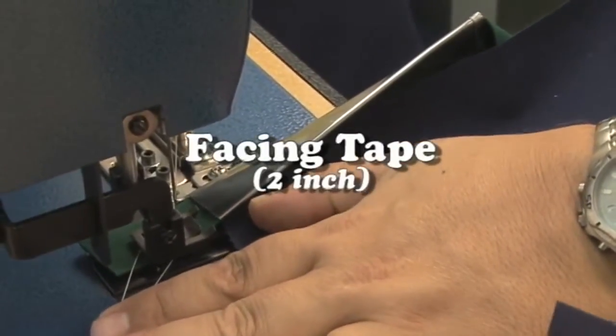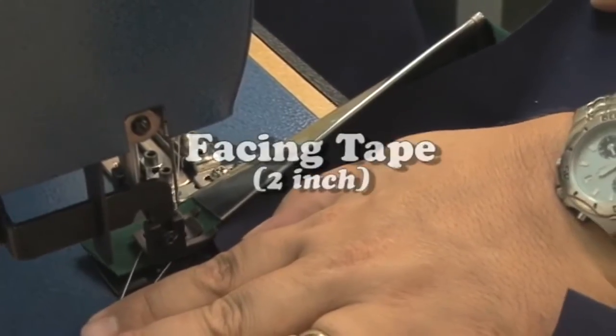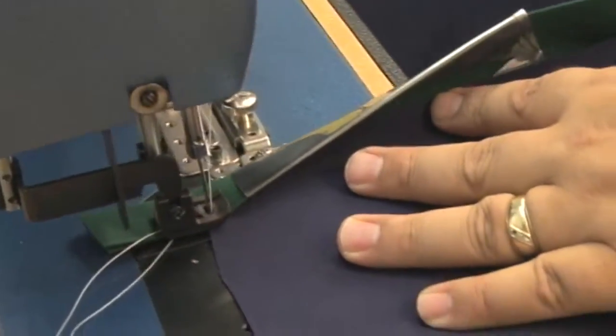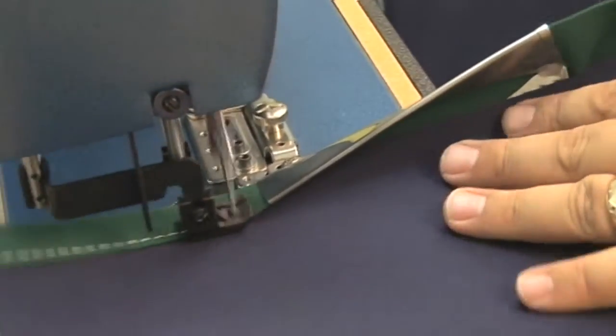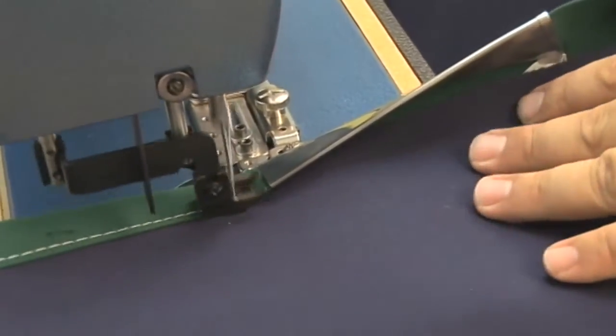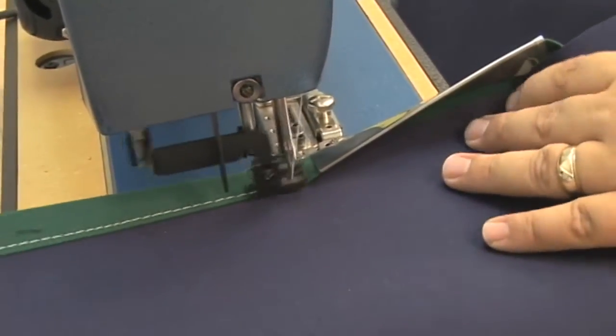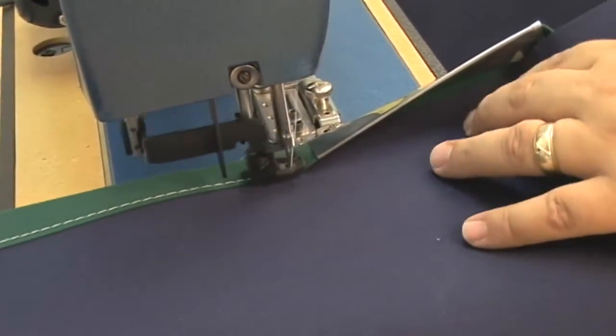We'll start out by showing you how it works with the 2 inch facing. This is a Sunbrella 2 inch facing, also works with Stamoid and other facing as well. This extremely high quality binder folds the facing automatically and keeps that stitch in exactly the same spot.